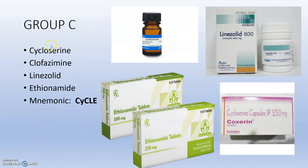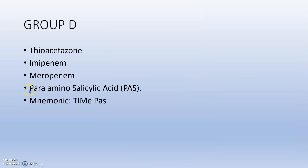Group C does not have a strict sub-classification, but mainly includes cycloserine, clofazimine, linezolid, and ethionamide. These drugs mainly act by inhibiting cell wall synthesis. The mnemonic is CYCLE — C-Y-C-L-E.